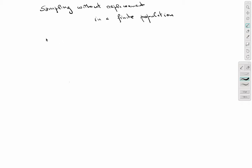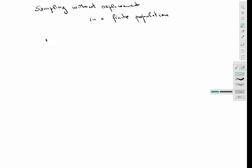Let's assume that we have a population with capital N individuals: x₁*, x₂*, the second individual, up to x_N*. I'm going to use the star notation to denote that these are elements from the population, consistent with notation used in other videos.